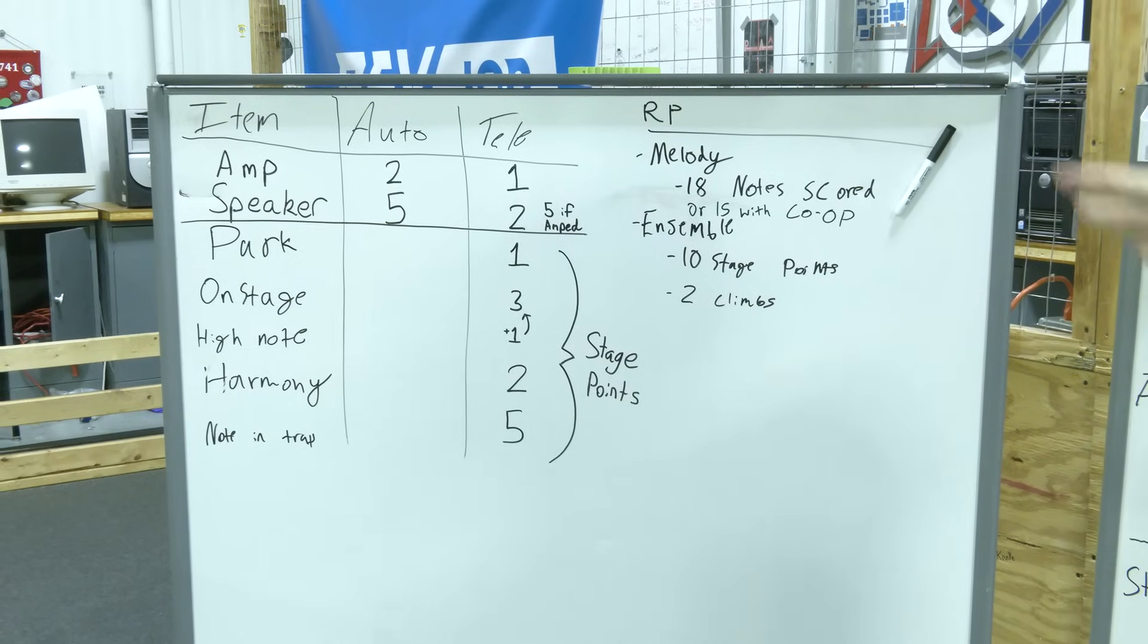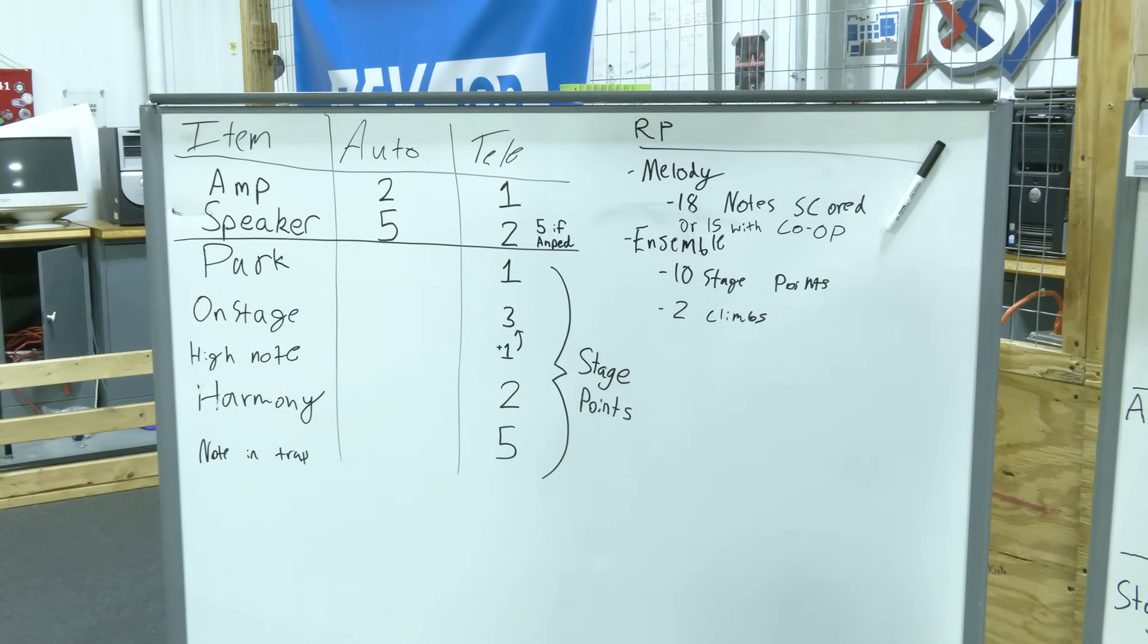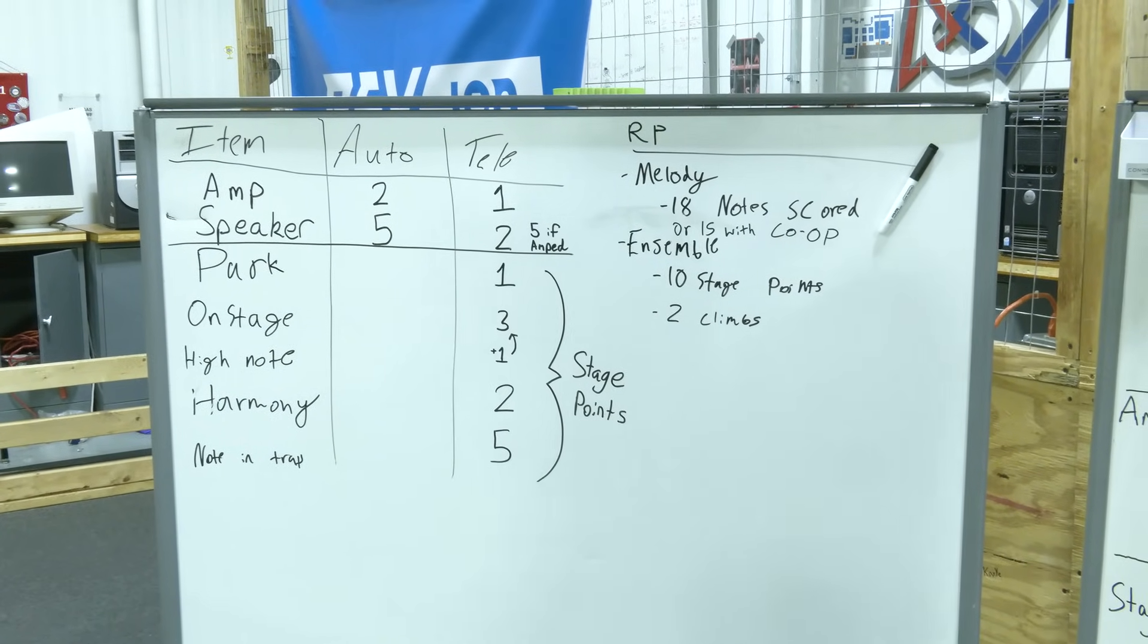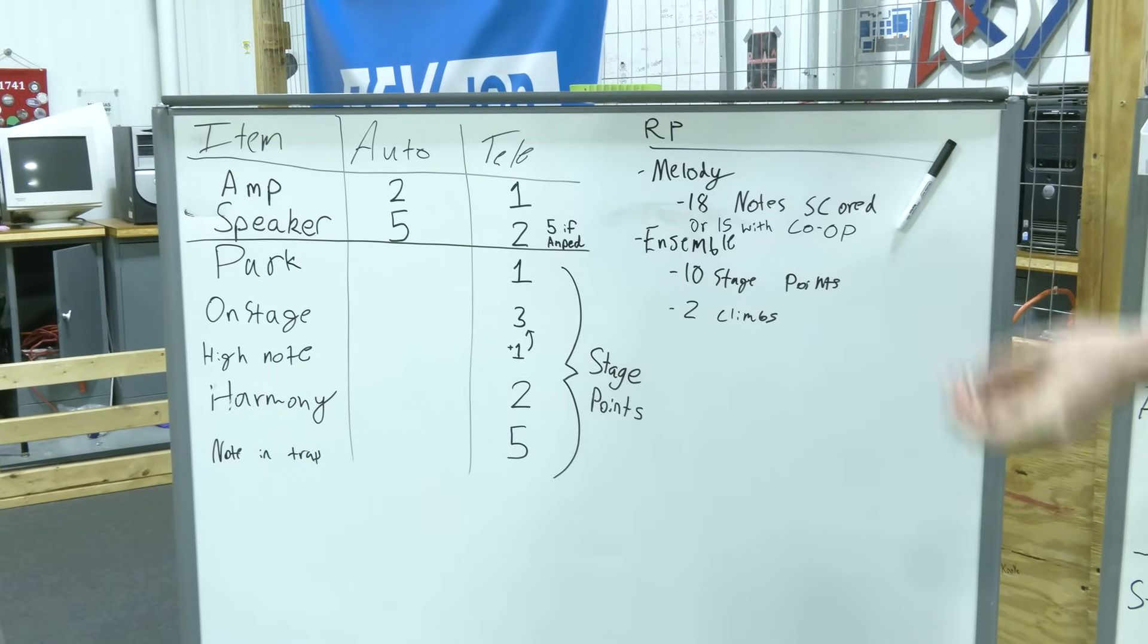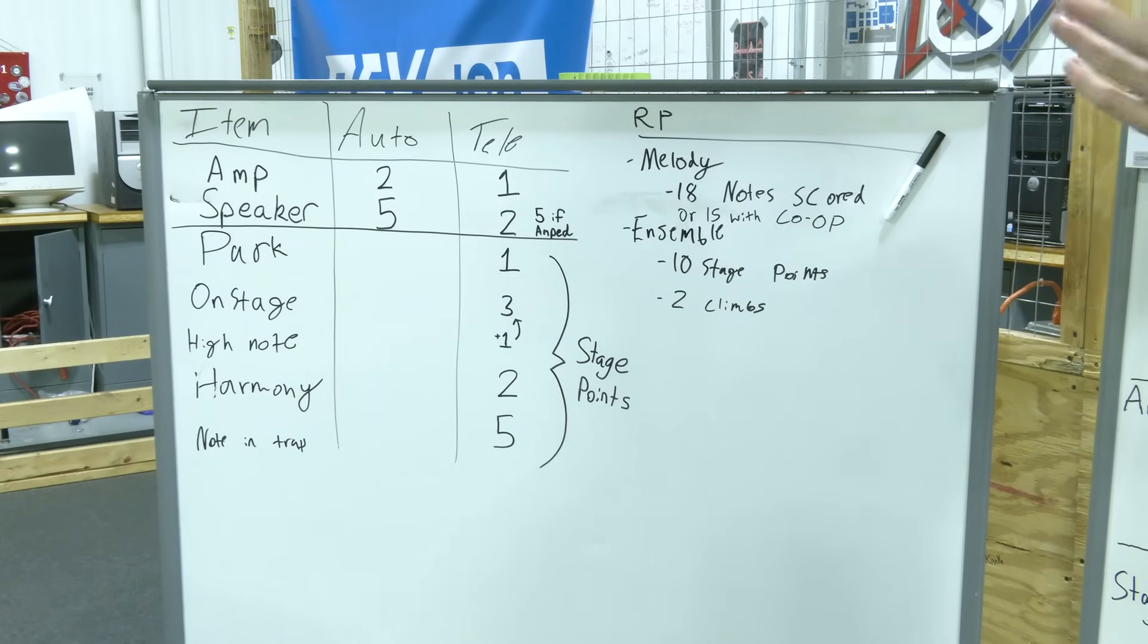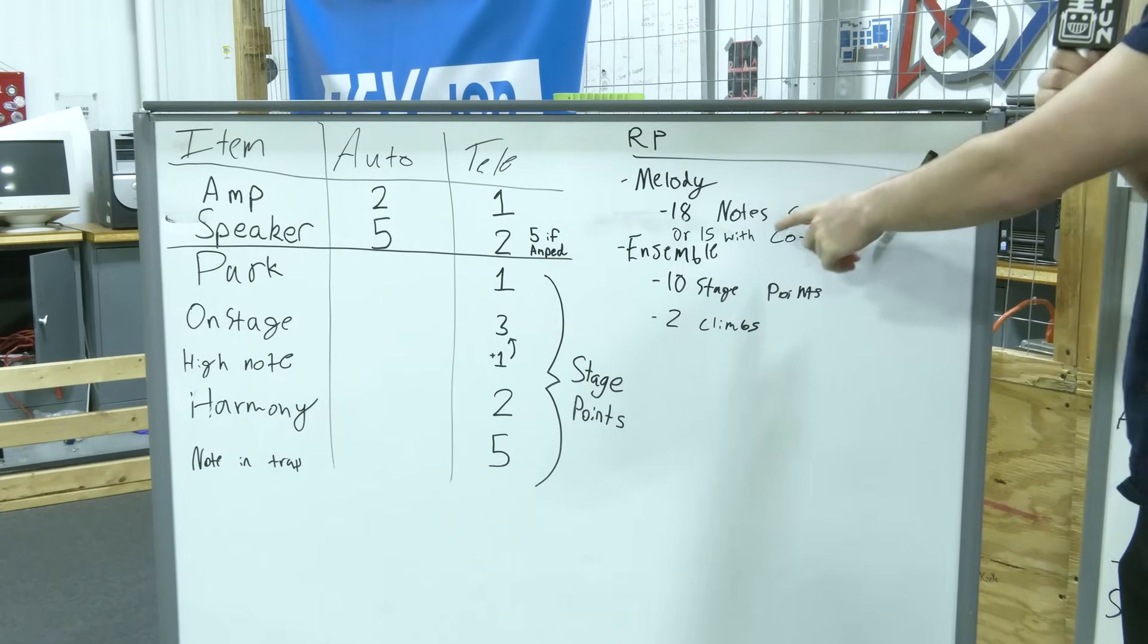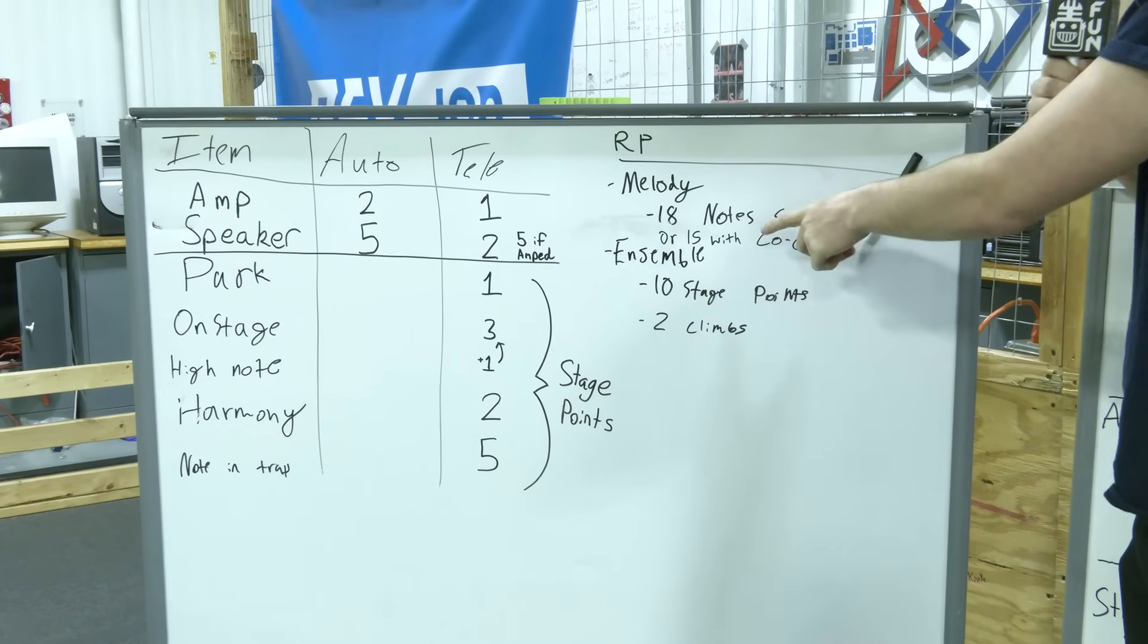However, one important note with the melody is that if you get the co-op, which is going to be in the first 45 seconds scoring a game piece, sorry a note in the amp, that'll basically allow you to go into competition and you're going to need both alliances to do that. And if you get that, that basically removes the maximum from 18 to 15.